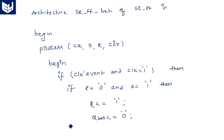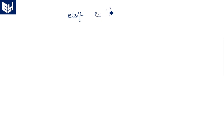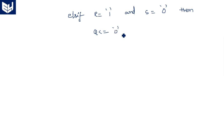Else if R = '1' and S = '0' then Q is assigned '0' and Q_bar is assigned '1', because the output should be reset — that's why Q is zero.